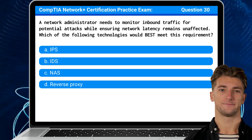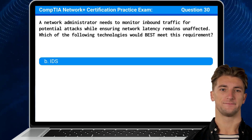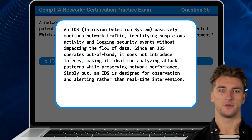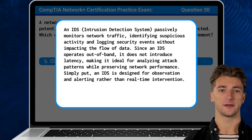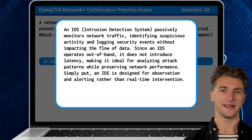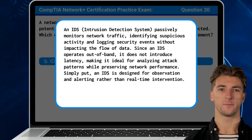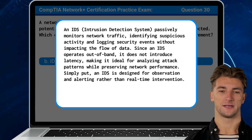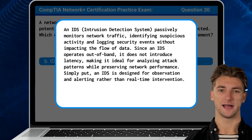The answer is B: IDS. An IDS, or intrusion detection system, passively monitors network traffic, identifying suspicious activity and logging security events without impacting the flow of data. Since an IDS operates out-of-band, it does not introduce latency, making it ideal for analyzing attack patterns while preserving network performance. Simply put, an IDS is designed for observation and alerting rather than real-time intervention.